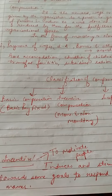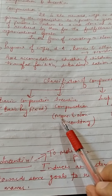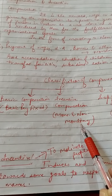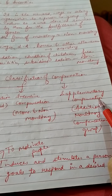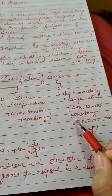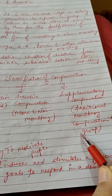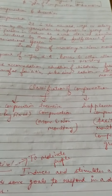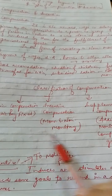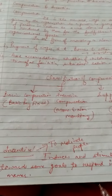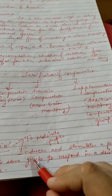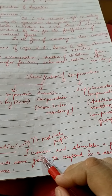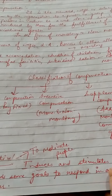The classification of compensation includes: first, basic compensation, which is the fixed pay; second, incentive compensation, which can be monetary or non-monetary; and third, supplementary compensation, in which additional monetary compensation is provided to a group of persons. These are the three categories into which compensation is divided.